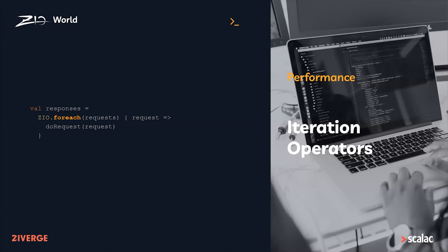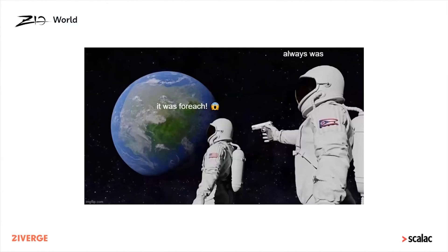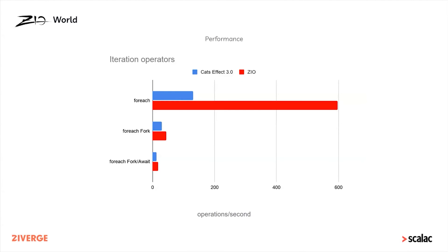Performance on iteration operators is also very important. forEach is so common that almost all problems can be solved by forEach, forEachPar, or forEachParN, so it's critical that these be fast. Work on the runtime system has contributed to performance increases here. The baseline forEach performance is phenomenal — incredibly fast. The slowest things right now are forking and awaiting, so doing those inside forEach measures more overhead, but these have been improved and will be improved more over the life of ZIO 2.0. This also answers the forEach versus traverse question: forEach is clearly the winner.